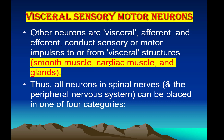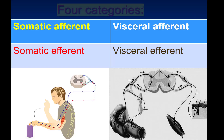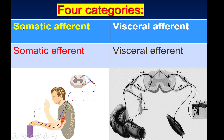Thus, all neurons in the spinal nerve and peripheral nervous system can be placed in one of four categories: somatic afferent, somatic efferent, visceral afferent, and visceral efferent.